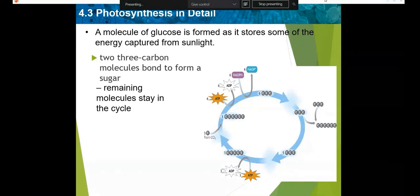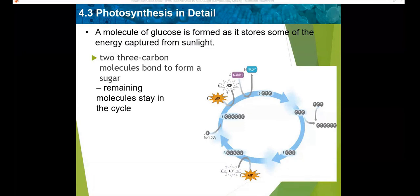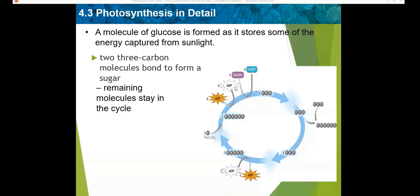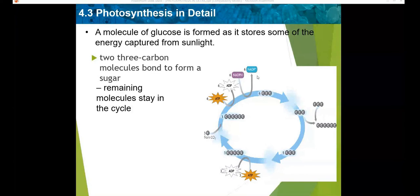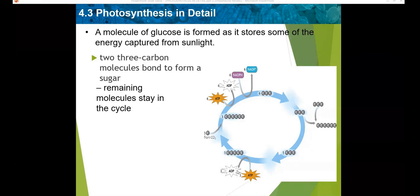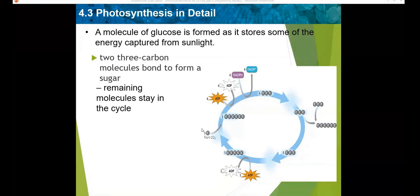Once the six-carbon molecule is split, energy from ATP and NADPH is used. When energy is used from ATP, it turns into ADP, and NADPH turns into NADP. After step four, the ADP and NADP return to the light dependent reactions where they receive energy and ADP is converted back to ATP. This is how the light dependent reactions are continued by the light independent reactions.